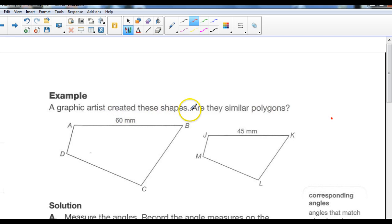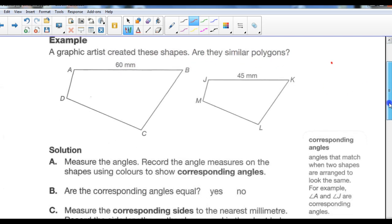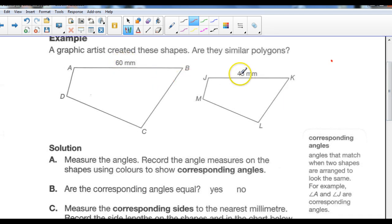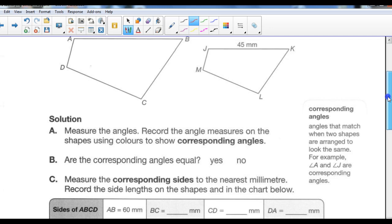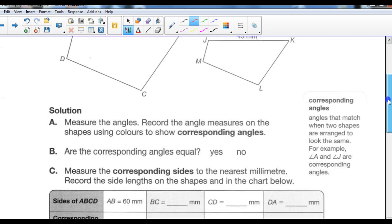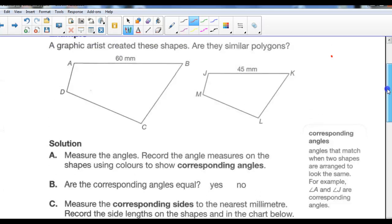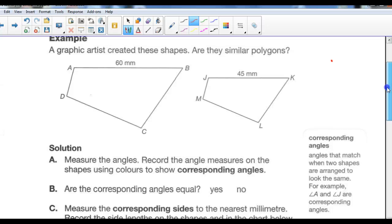A graphic artist created these shapes. Are they similar polygons? Well, we know they're polygons, but how do we know if they're similar? Well, this is 60, this is 45. They don't have to be the same, but we just have to know if this one, when it's increased to this one, is increased by the same scale factor for all the sides. That means that JM has to increase the same as AD, the same ratio as JK increased to AB, and so on for all the sides. So the solution. So you measure the angles, record the angle measures on the shapes using colors to show corresponding angles, so you can go ahead and do that. You can measure the angles with your protractor.